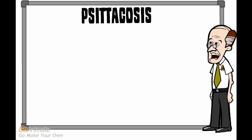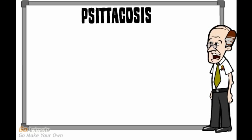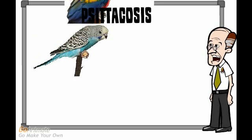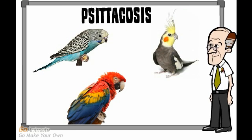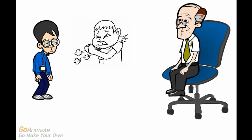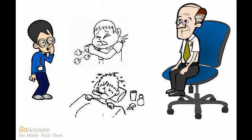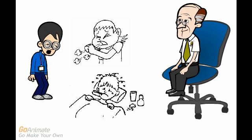Psittacosis is an infection caused by Chlamydia psittaci, which is a type of bacteria found in the droppings of birds including parakeets, macaws, and cockatiels. Birds often do not show symptoms, but in humans, symptoms include blood-tinged sputum, dry cough, fatigue, fever and chills, headache, joint aches, muscle aches, and more.